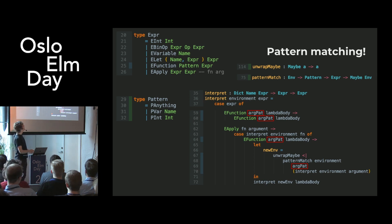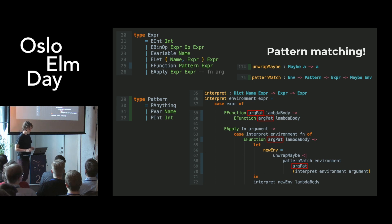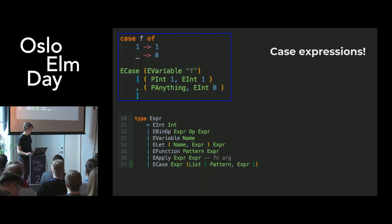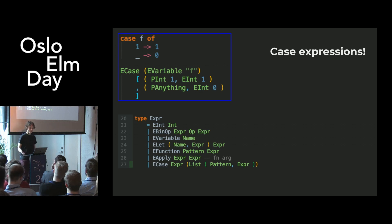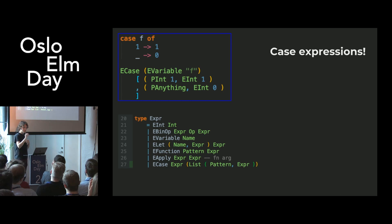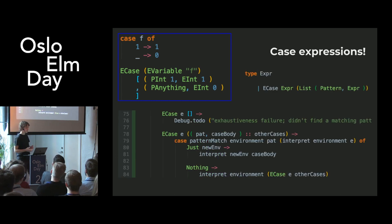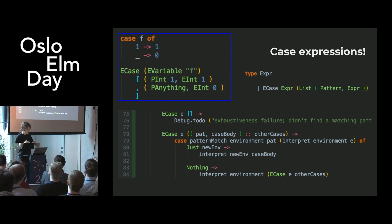I have a slightly nasty helper here — the unwrap Maybe function. This one will never crash, I promise, but the Elm type system doesn't trust me on this one. Next up: case expressions. Case expressions are really simple — it's just an expression and a list of pattern-expression pairs. The way we evaluate these is by going through each pair, trying to pattern match, and as soon as we find a match, evaluating and returning the right-hand side.